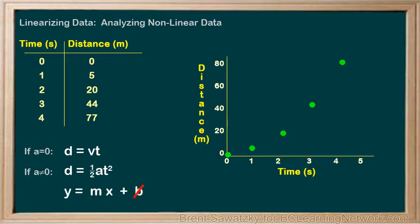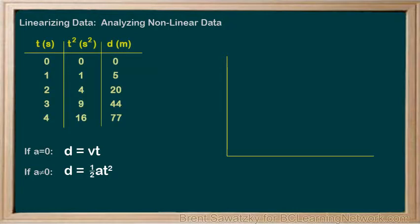Instead of the y, we have d, and instead of the x, we have t squared. So we make a new column for our data and we call it time squared. For the data in this column, we just square each one of our original times. And with our new set of data for our x axis, let's reproduce the graph.